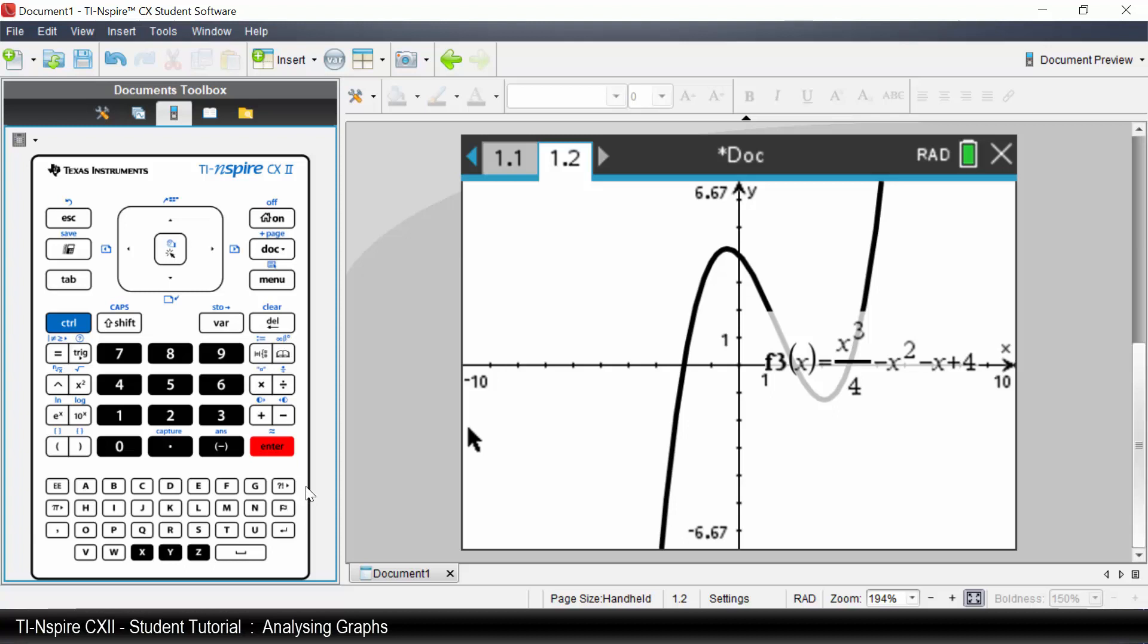On the calculator, move the cursor to be over the equation. The cursor changes to a hand. Press the center of the touchpad for 2 seconds and the hand closes. Use the touchpad arrows to move the equation to another place on the screen. Press Escape. As I am using the computer software, I will click on the equation and move it.